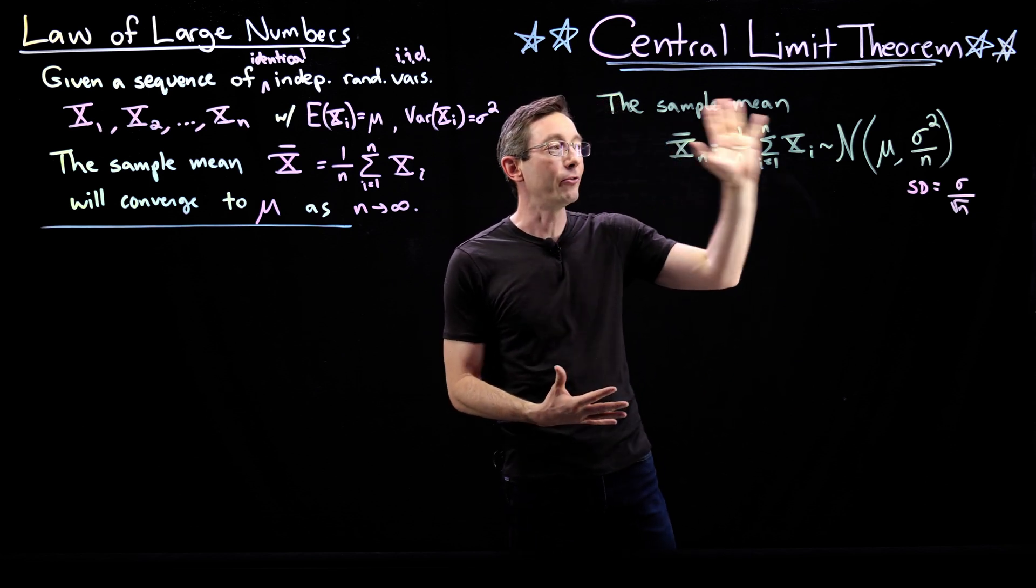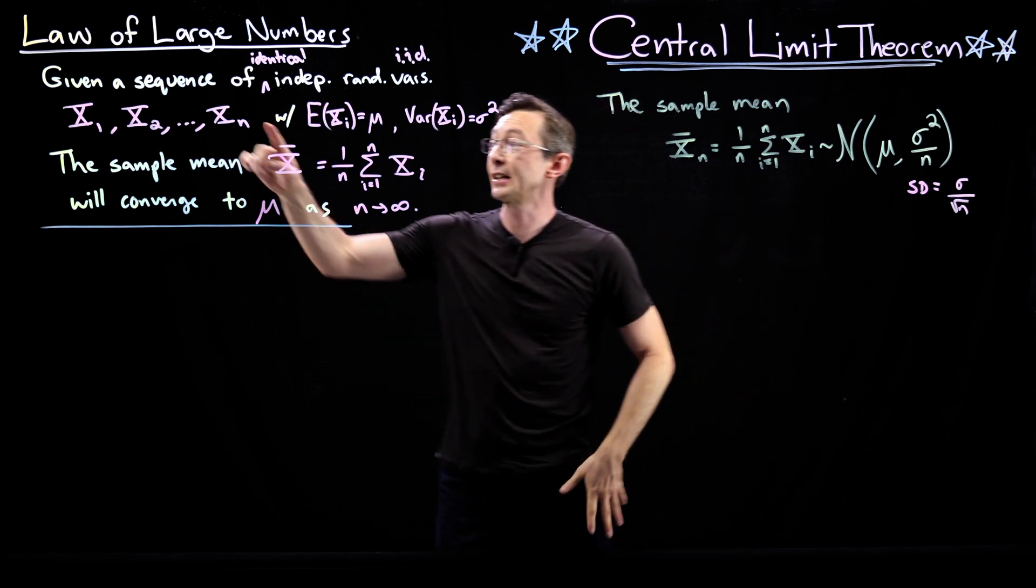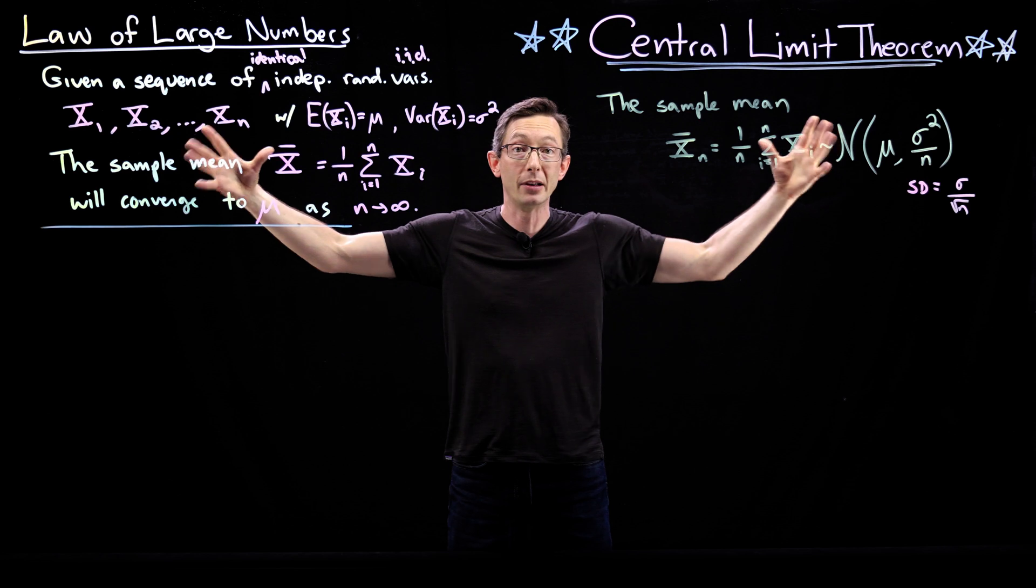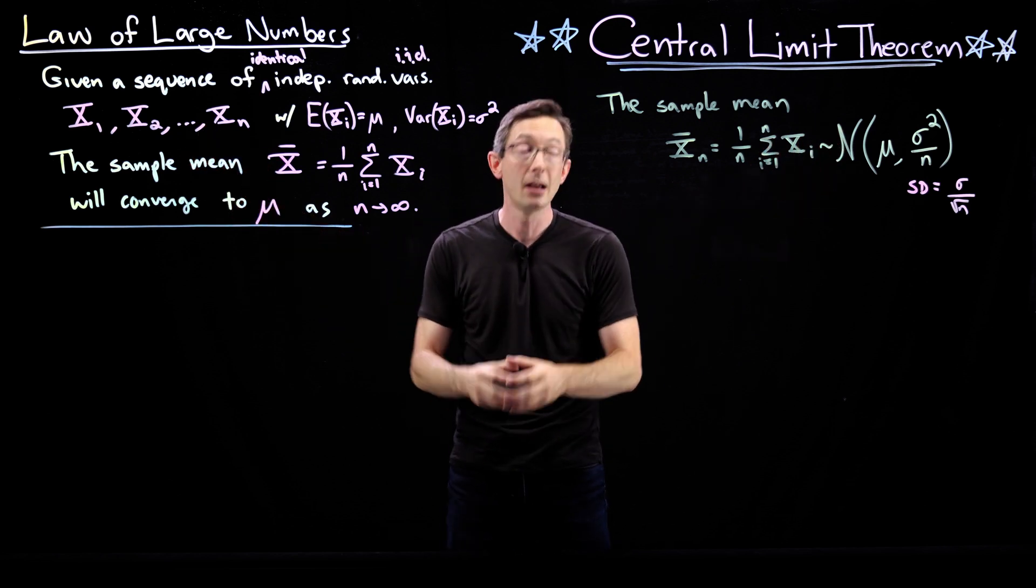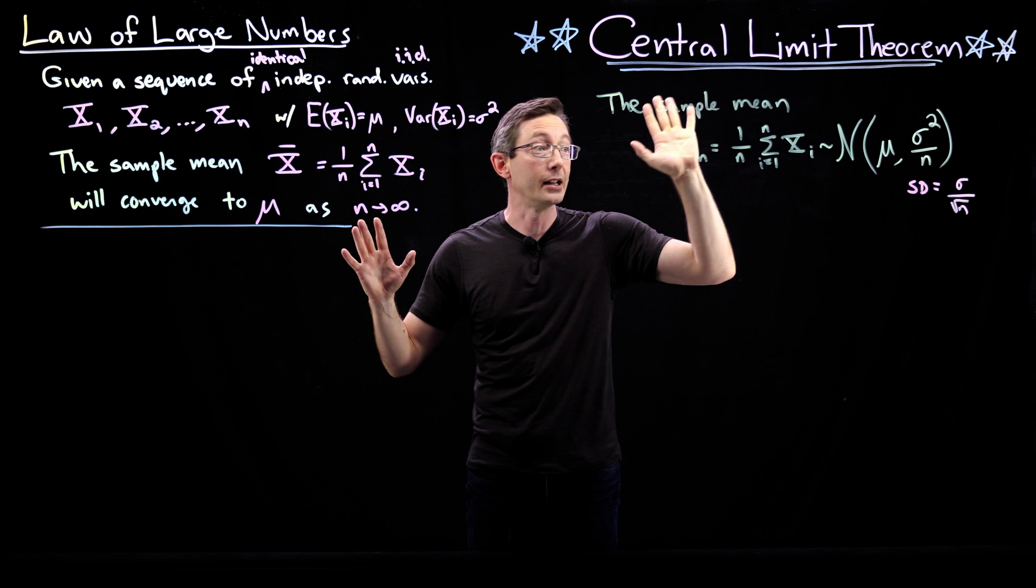This has profound implications for modeling experimental error, how to do statistics to tell something about the large population from a small sample mean. And it's one of the most important theorems in all probability and statistics.